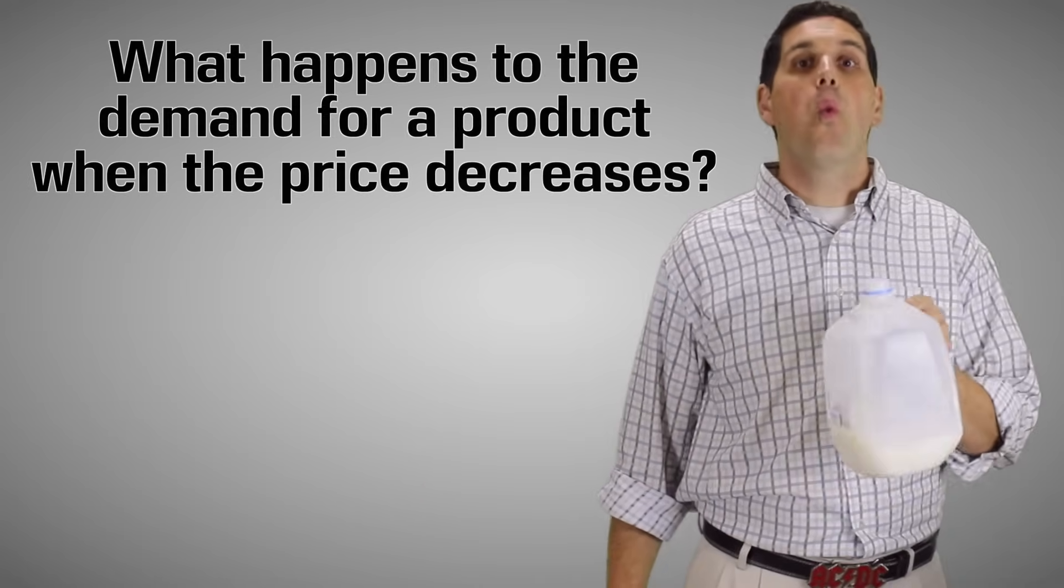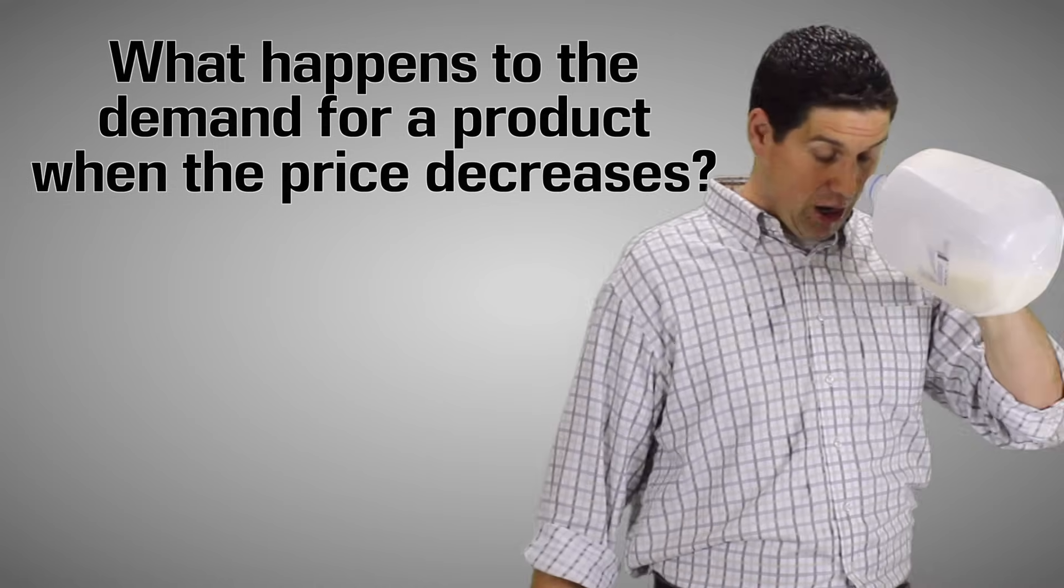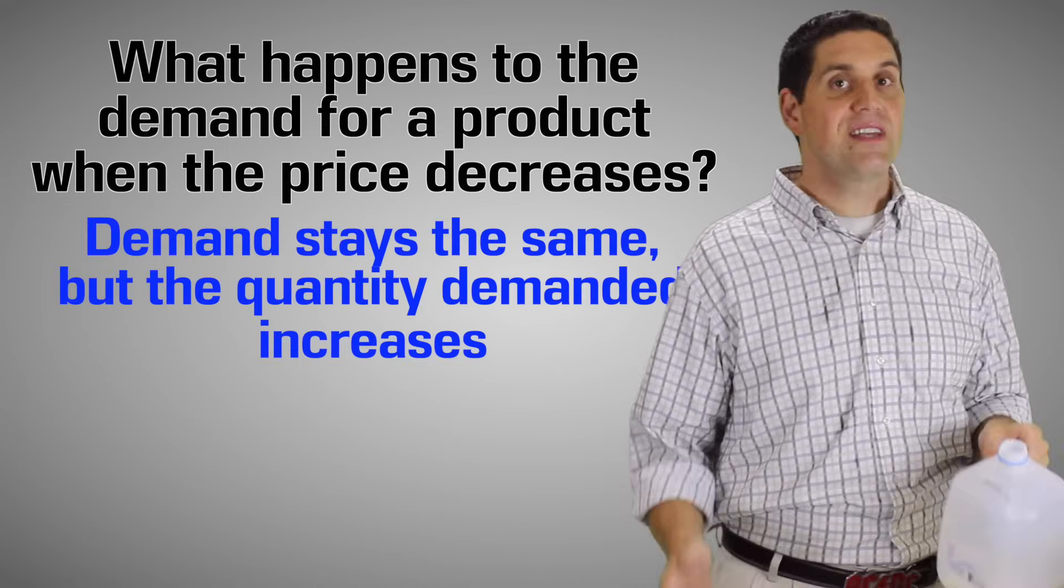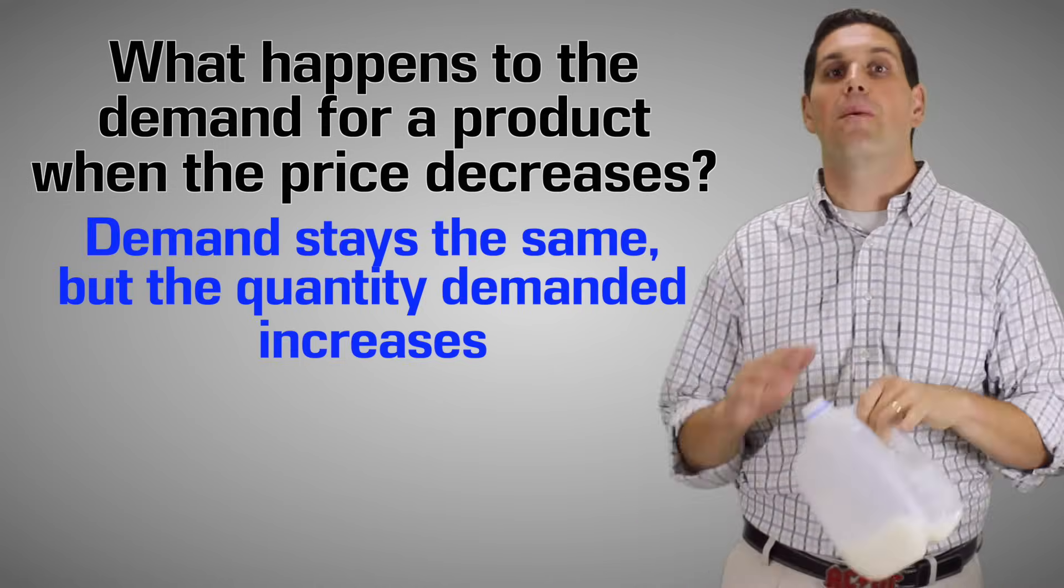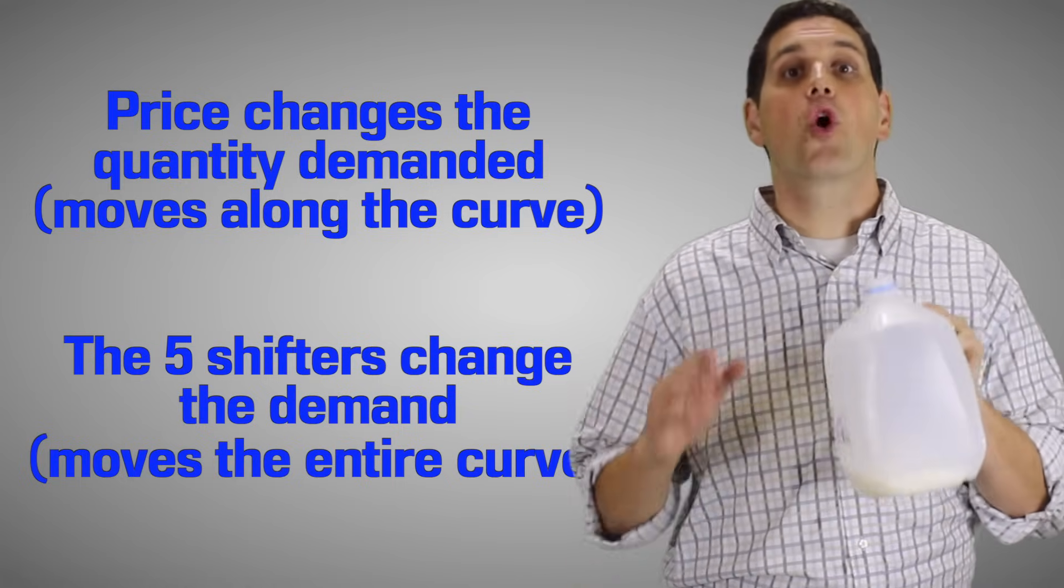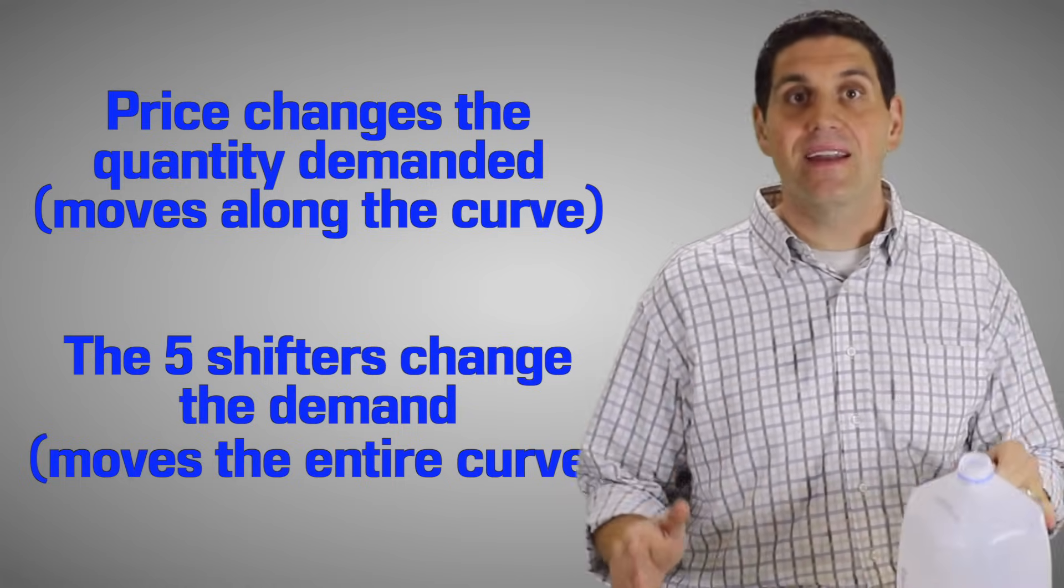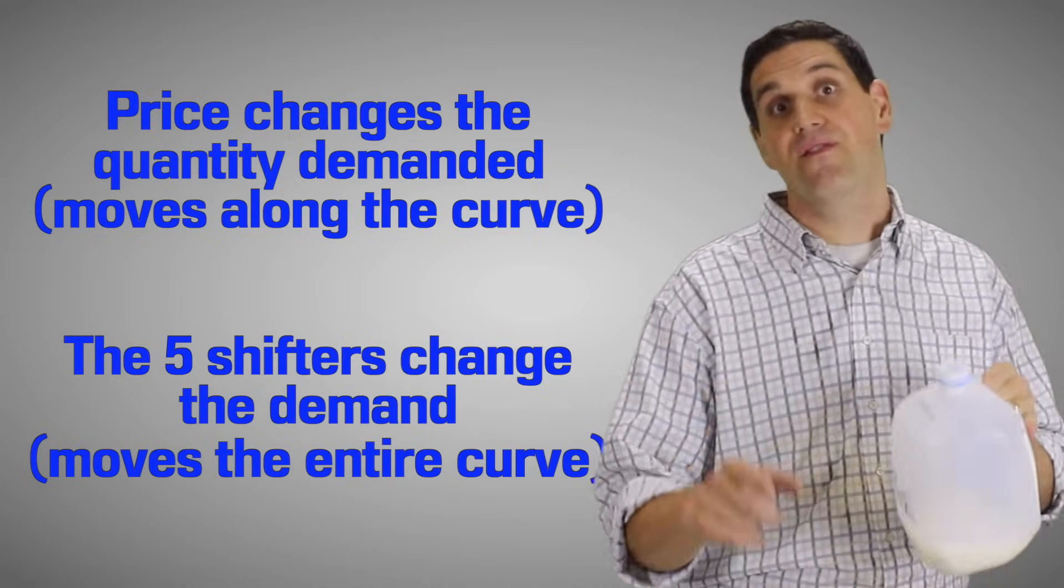So I got a question for you. What happens to the demand when the price goes down? Oh gosh, this is a bad idea. So the answer is nothing. When the price goes down, demand stays exactly the same. Price causes the quantity demanded to change. The only thing that changes quantity demanded is the change in price. And the only thing that changes demand is one of the five shifters of demand.